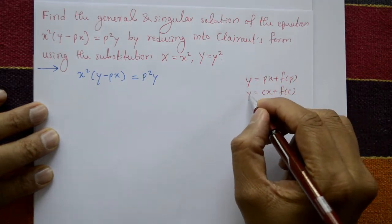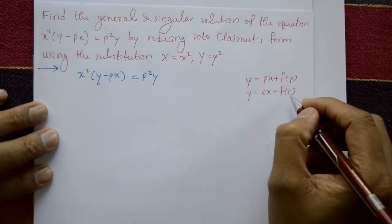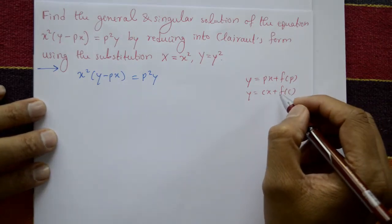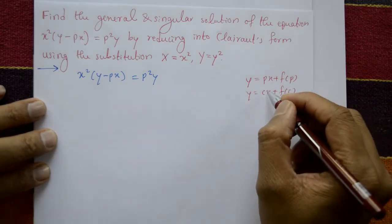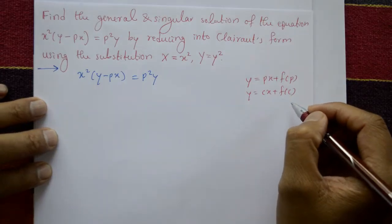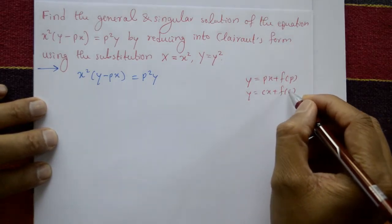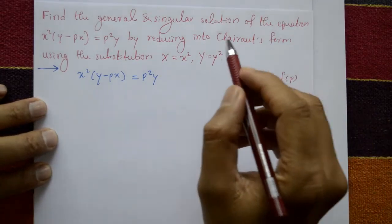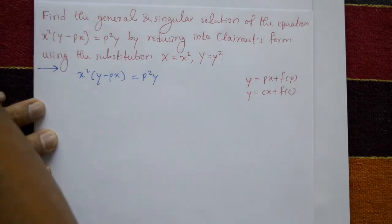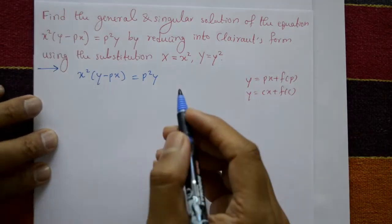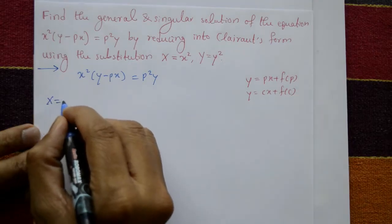This is the general form of the Clairaut equation and this is the general solution of the Clairaut equation. After obtaining the general solution, differentiate partially with respect to c, find the c value and substitute back in the equation to get the singular solution of the Clairaut equation.